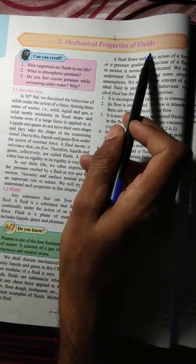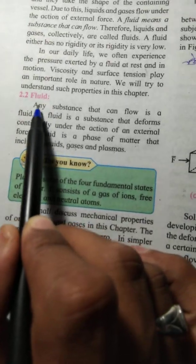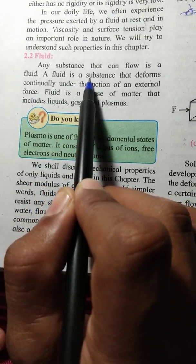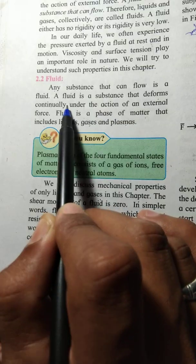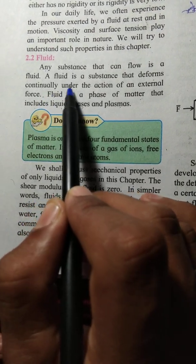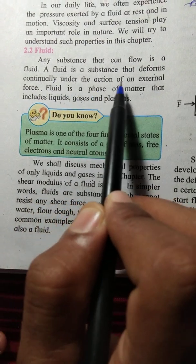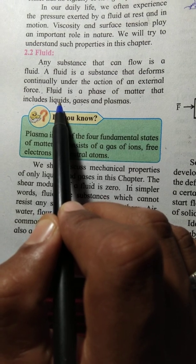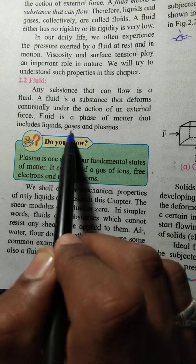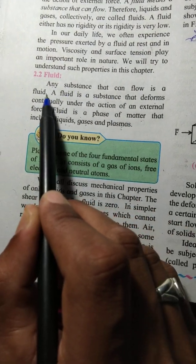Second topic is mechanical properties of fluid. So here, definition of fluid. Anything that can flow is called as a fluid. A fluid is a substance that deforms continually under the action of external force. When you start external force, you start deforming. A fluid is a phase of matter that includes liquids, gases, and plasmas.